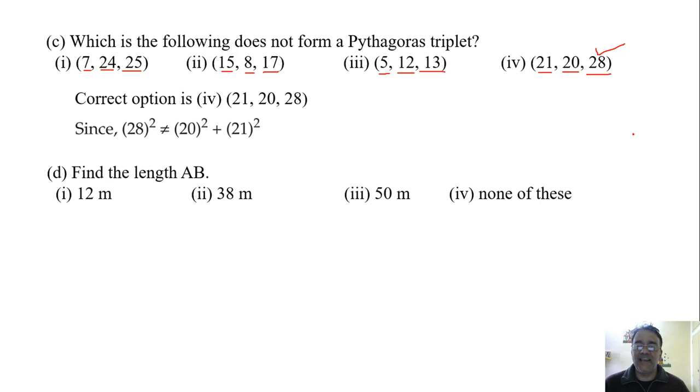So now we will move towards the next question. Find the length AB. So already we got AC in the previous question. See this diagram, ABC is a right triangle. ABC is a right triangle and we have to find AB. Suppose B point is given 12 meters. So what is the length AB? We already got AC in the second question.